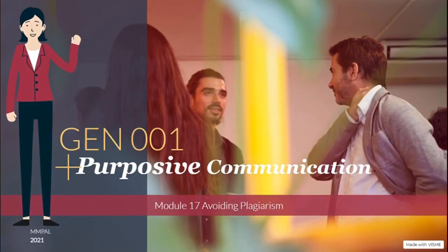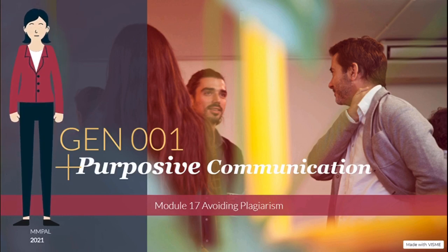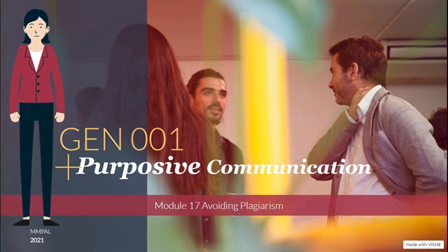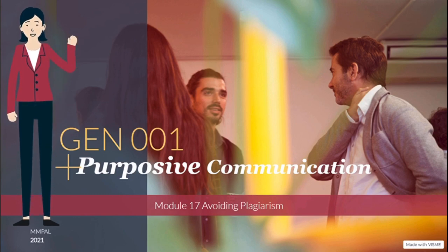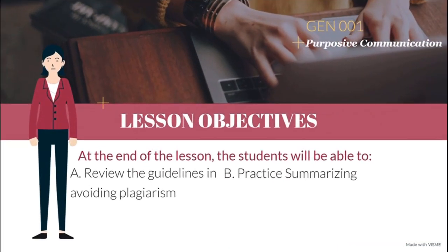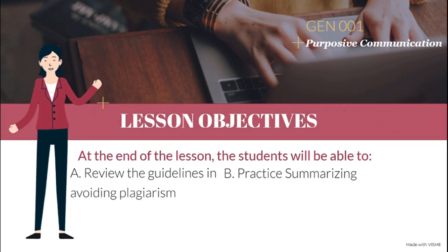Good day, Freshman Flames. This is Mom Marge, and this is a new week of our series of discussions for Gen 001 Purposive Communication. We are done with the second periodic exam and these two lessons. Lesson 16 was discussed earlier by Mom Ivy, and Lesson 17, to be discussed by yours truly, marks the start of the third periodic grading. This week, Lesson 17 is all about avoiding plagiarism. Before we delve further into our discussion, here are your lesson objectives.